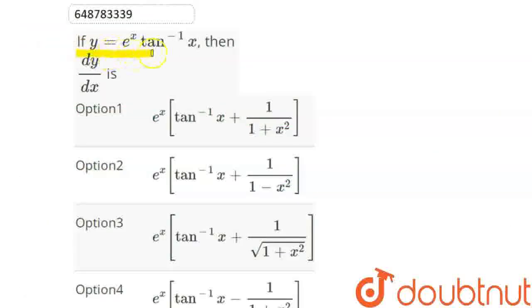If y equals e to the power x tan inverse x, then dy by dx is. First of all, let y equal to f(x) times g(x).